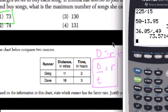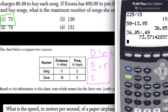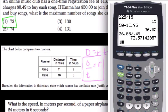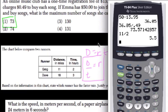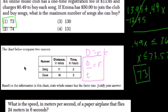In Greg's case, distance 11 divided by the time, 2 — his rate was 5.5 miles per hour.